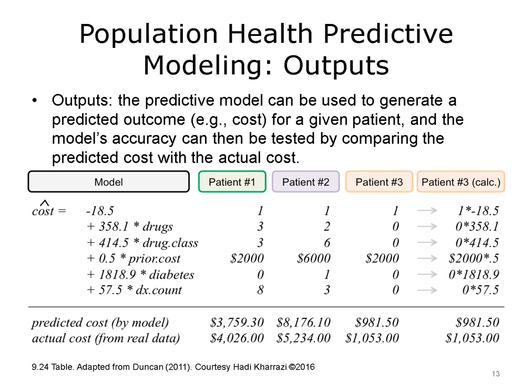The figure shows how each of the coefficients of the model are used to calculate the cost for patient number 3. This patient does not have any diagnosis and is not taking any drugs but has had a prior cost from the base year of $2,000. Thus, the total predicted cost of this patient is minus 18.5 plus 0.5 multiplied by the patient's prior cost of $2,000, giving a total predicted cost of $981.50. Calculation steps for patients 1 and 2 are not shown, but the total predicted cost can be found for each. If the actual cost of all patients is available, you can compare the predicted cost with the actual cost to evaluate how well the model is performing. For patient number 3, the predicted cost of $981.50 is lower than the actual cost of $1,053.